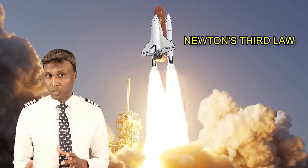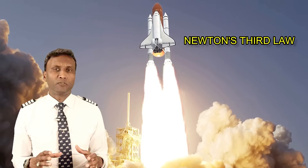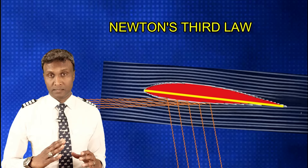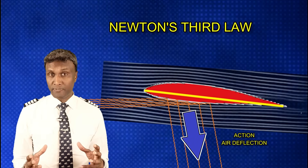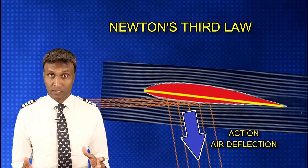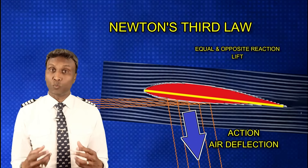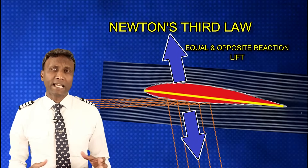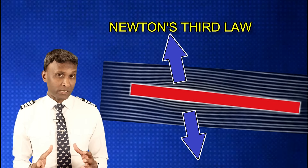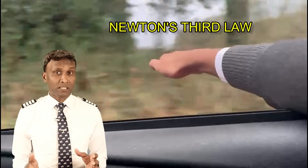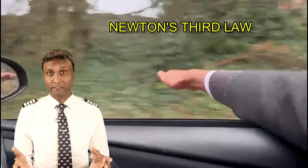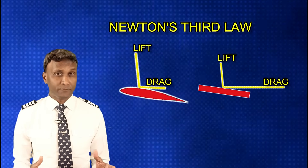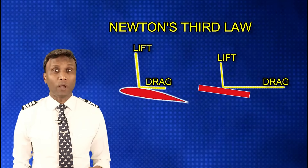How does Newton's third law come into play in generating lift by the wings? The wings are slightly tilted upward with a positive angle of incidence. As the aircraft moves through the air, the wings deflect air downward — this is the action. The equal and opposite reaction is the wings being pushed upward, and this upward force is what we call lift. Even a flat plate at an angle will generate lift, just like tilting your hand slightly upward against the wind while driving. The aerofoil shape is optimized for a better lift-to-drag ratio than a flat plate.